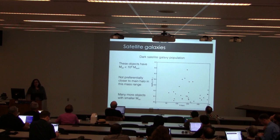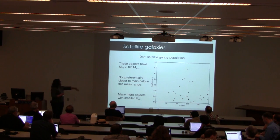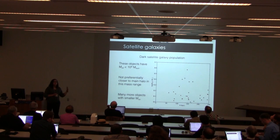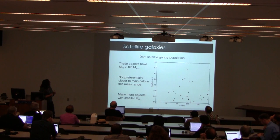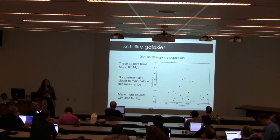Looking quickly at the dark satellite galaxy population, I've plotted halo mass versus radius to see if there's some trend — are the dark satellites preferentially closer in? You can see that all these objects have virial masses less than 10^9 solar masses and are not preferentially closer to their main halo, though there are many more objects with smaller virial masses.